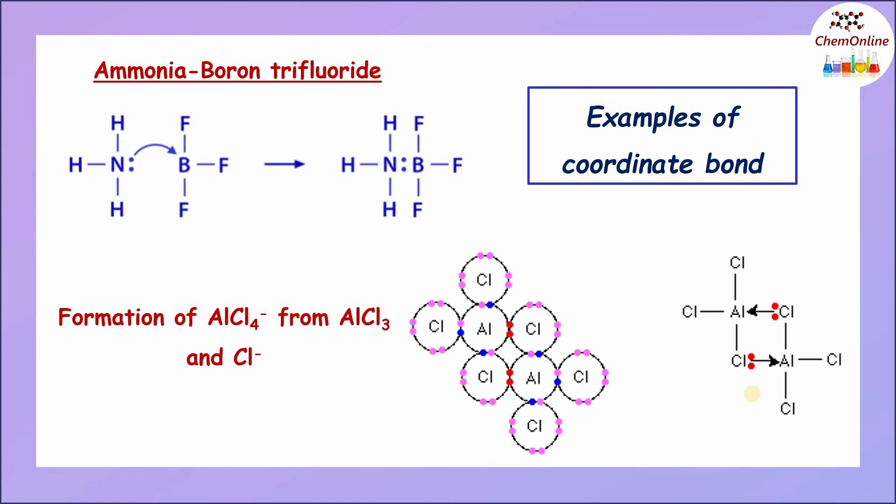So, we have seen what is meant by a chemical bond and the different types of chemical bonds: ionic bond, covalent bond, and coordinate bond.